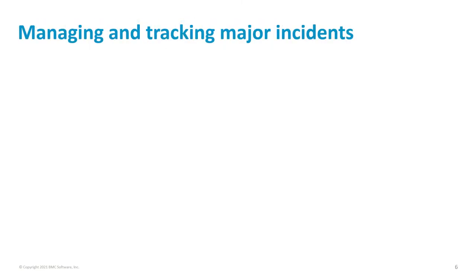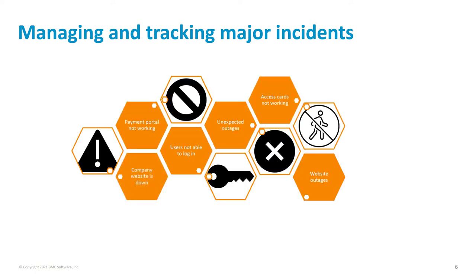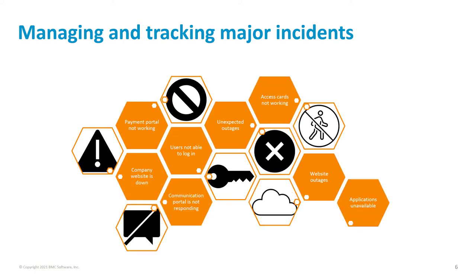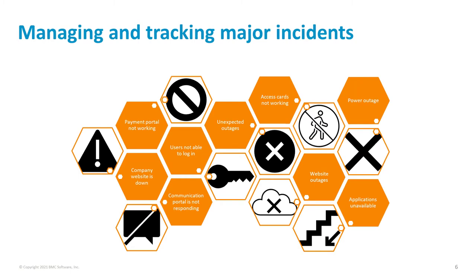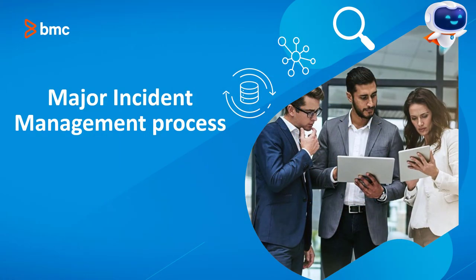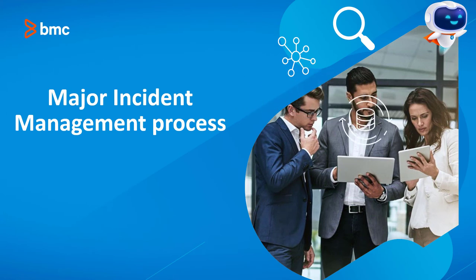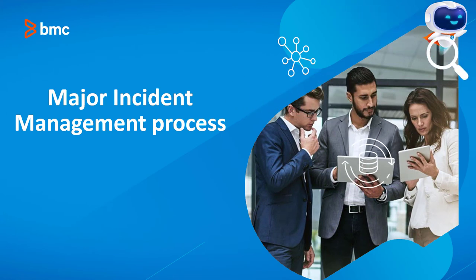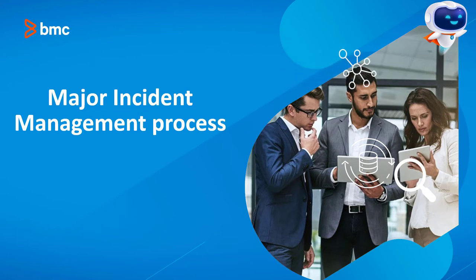Because major incidents cause widespread disruption to a service and potential impact on the business, organizations need to establish a robust major incident management process. Major incident management is a critical process — it demands deep analysis of an incident, supported by a stronger basis of data and a robust approach to avoid extended outages and impacts.